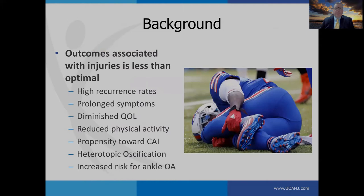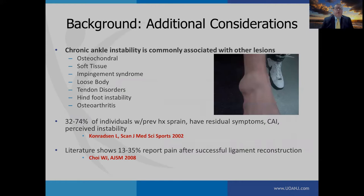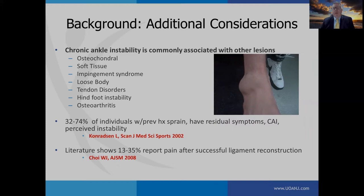There are less than optimal outcomes which oftentimes occur with ankle sprains: high recurrence rate, prolonged symptoms, diminished quality of life, reduced physical activity, a propensity towards chronic ankle instability, an association with heterotopic ossification, and an increased risk for ankle osteoarthritis. Conradson found that 37% to 74% of individuals with a previous history of sprain had residual symptoms, chronic ankle instability, and perceived instability. Troy reviewed patients who had undergone successful ligament reconstruction and found that 13% to 35% still had pain after surgery, suggesting other contributing factors.